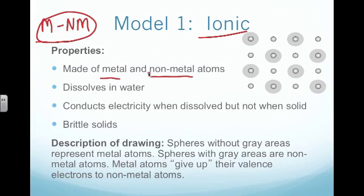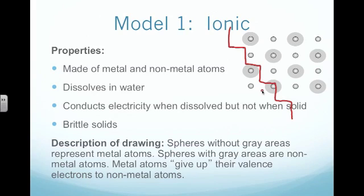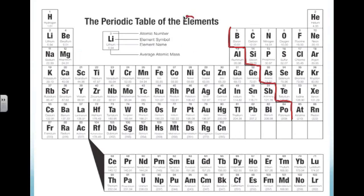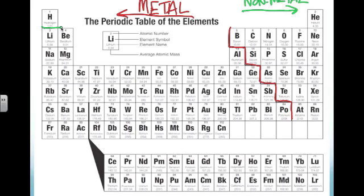Just to revisit this whole metal and nonmetal distinction — if we take a look at our periodic table, we remember that there's this staircase. This staircase splits going down and to the right-hand corner. Anything on the left-hand side of the staircase is considered a metal, and anything on the right-hand side would be considered a nonmetal. Remember that hydrogen up in the top left-hand corner is an anomaly — he's actually considered a nonmetal. But everything else over on the left would be considered a metal.